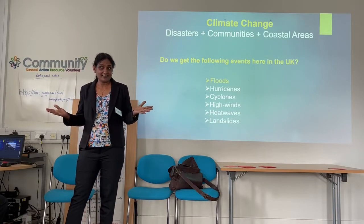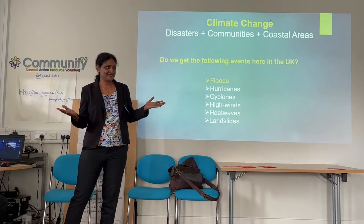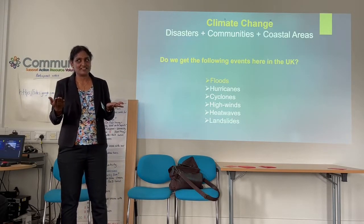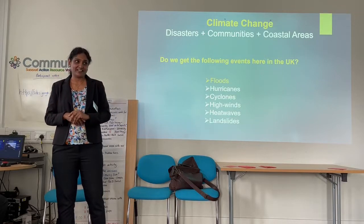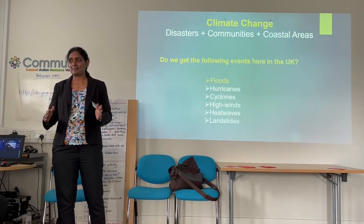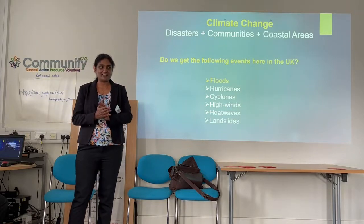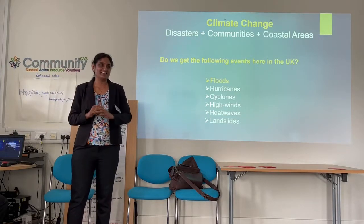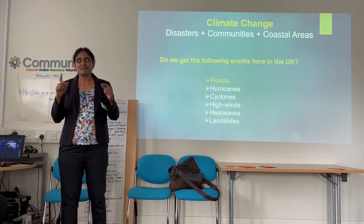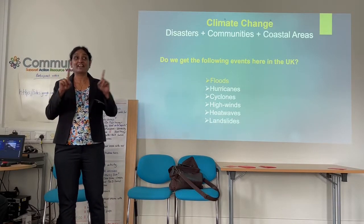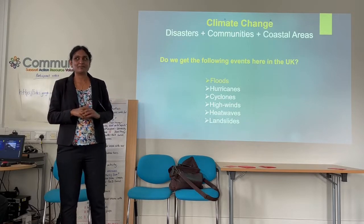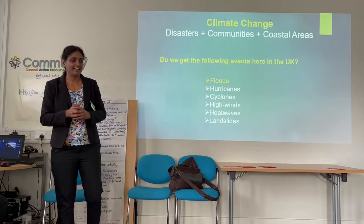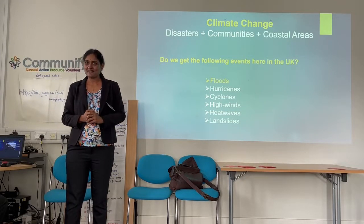When the sea surface temperature is more than 27 degrees, then only do we get hurricanes. Here in the United Kingdom, our sea surface temperature is between 16 to 18 degrees for the next 100 years, so we are very safe. However, we do experience hurricane-force winds due to climate change, and high winds — as I mentioned — we are definitely getting.